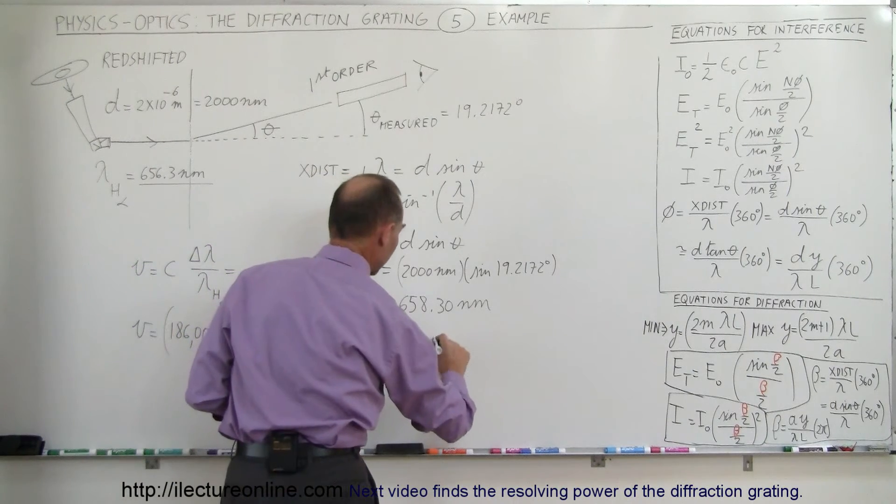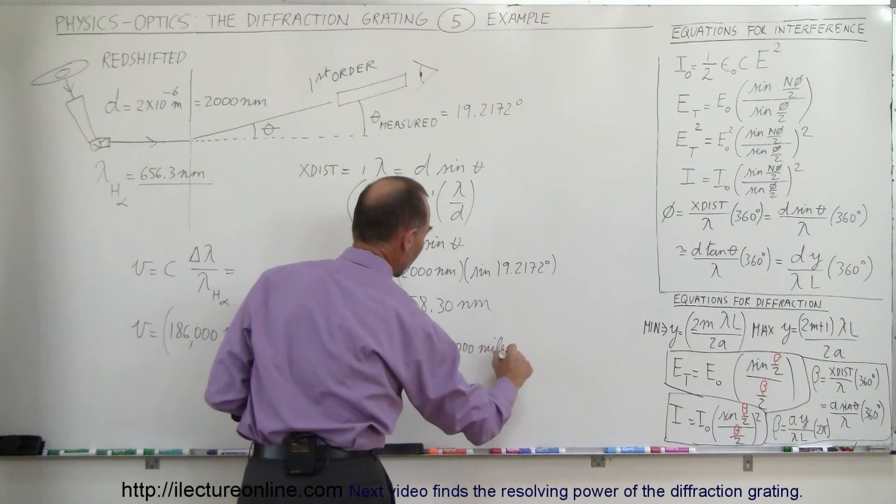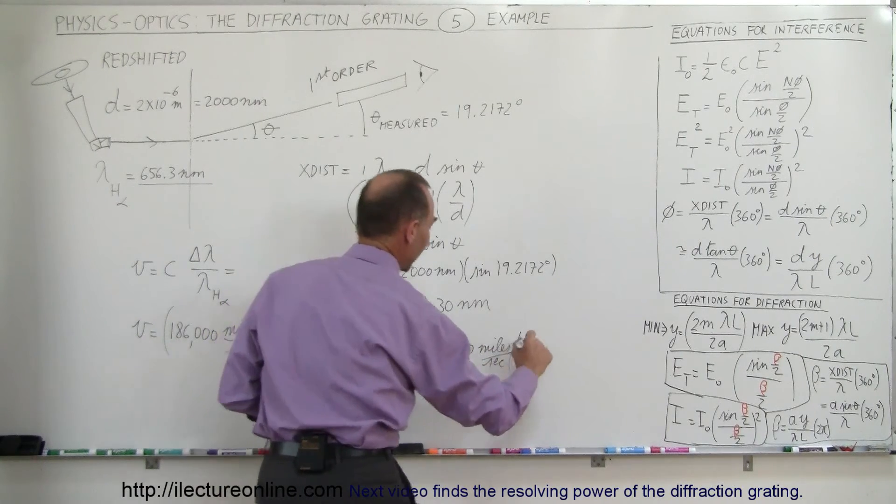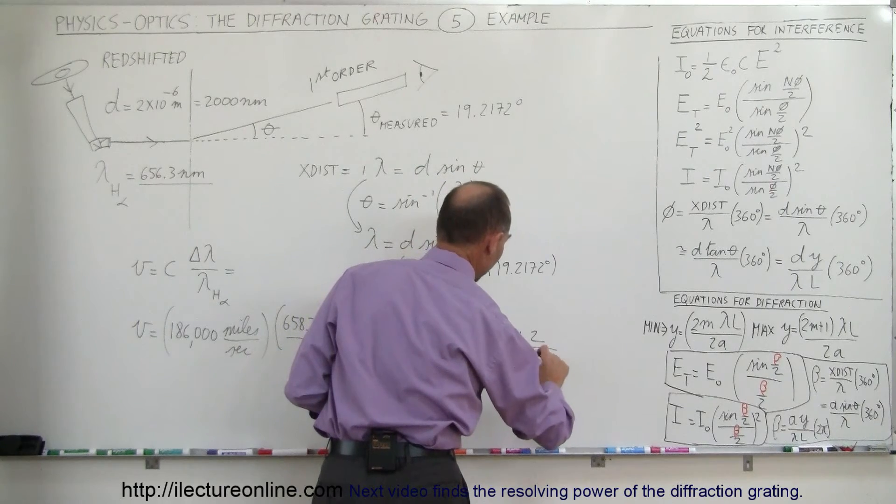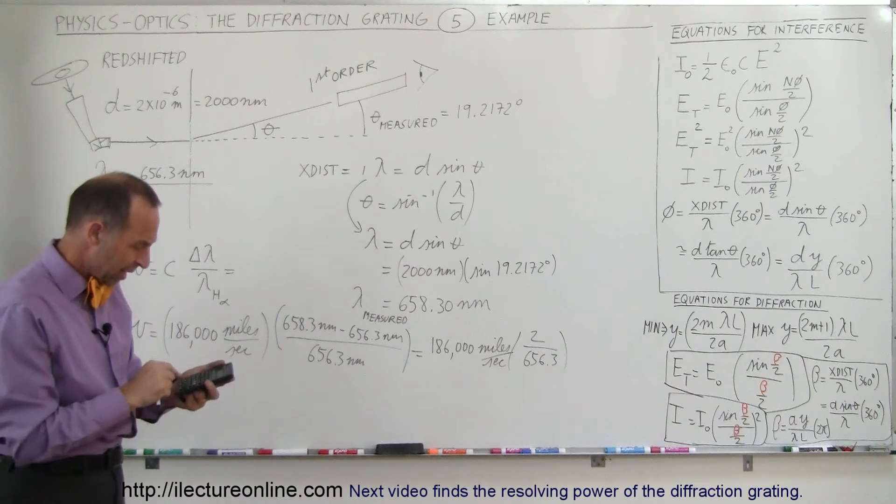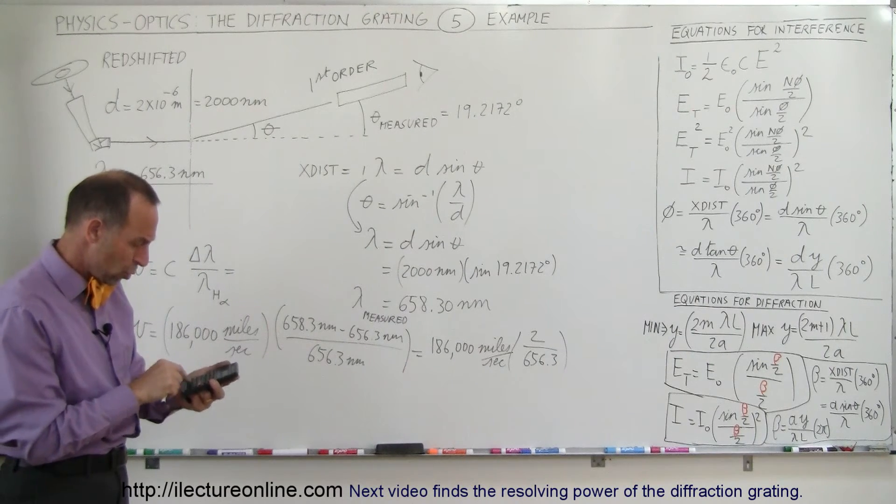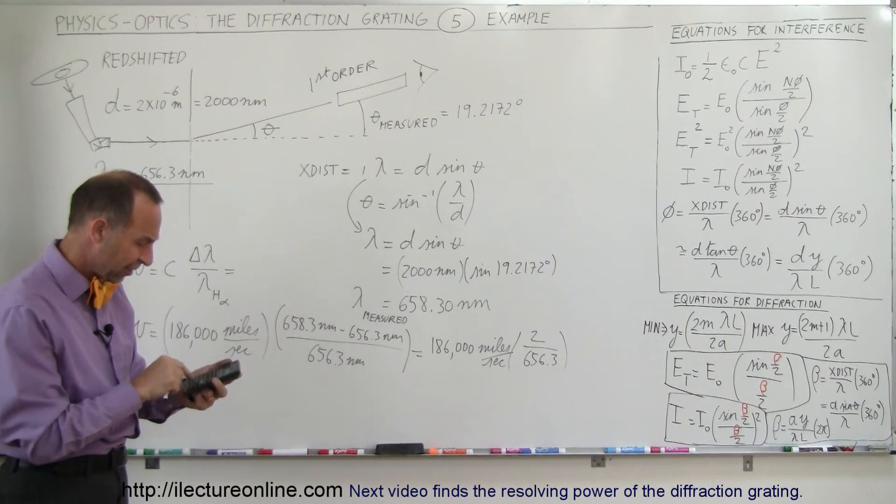So this is therefore equal to 186,000 miles per second, multiplied by times 2 divided by 656.3, because the units will cancel out. So we get 186,000 times 2 and divided by 656.3.